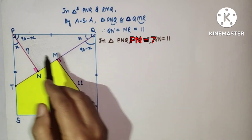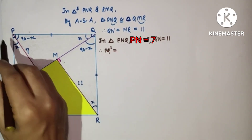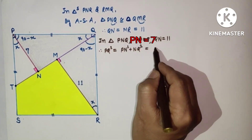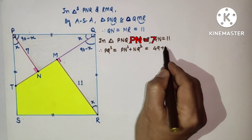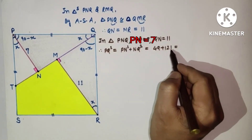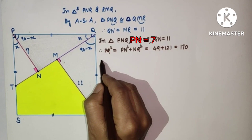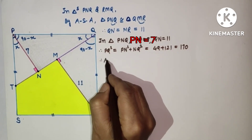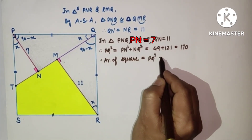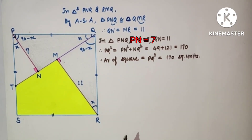By the Pythagorean theorem, PQ² equals PN² plus NQ², that is 49 plus 121, which equals 170. Therefore the area of the square equals side squared, that is PQ² equals 170 square units.